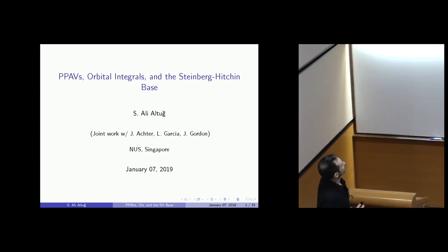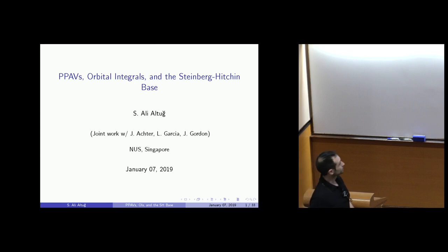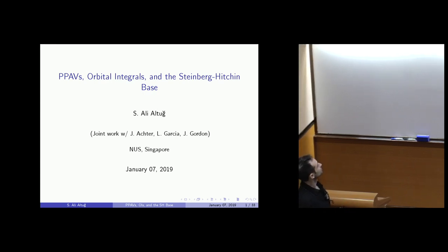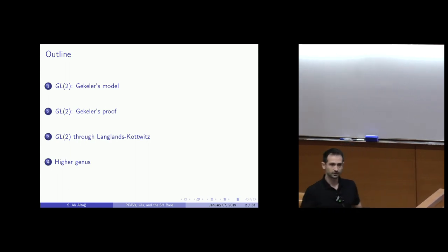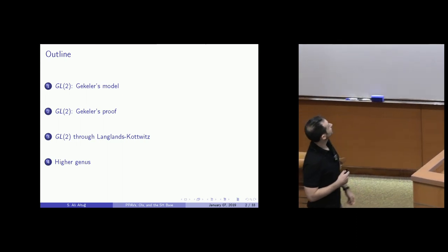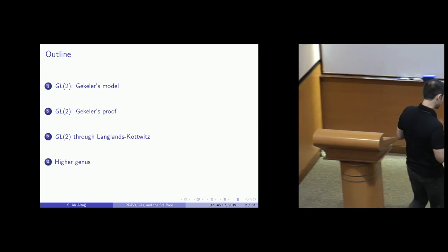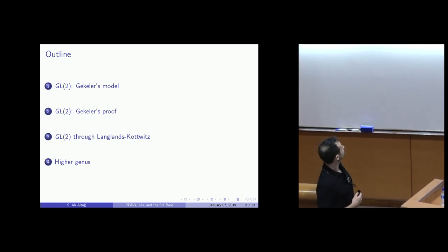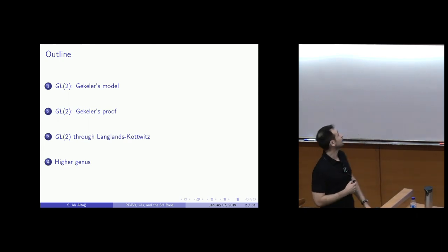PPAVs refer to principally polarized abelian varieties. The talk concerns orbital integrals and the Steinberg-Hitchin base. Some of these things came up in the workshop lectures last week, especially orbital integrals and the Steinberg base. We're going to see how these things relate to principally polarized abelian varieties. The aim of the talk is the following: Gekeler had a beautiful paper in 2003 where he expresses the number of elliptic curves isogenous to a given elliptic curve as a local mass formula. The whole premise of the talk is to put Gekeler's proof in a more conceptual form and to generalize it to higher genus.